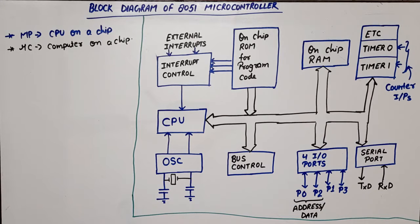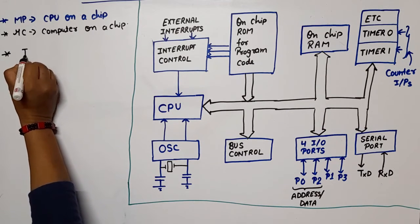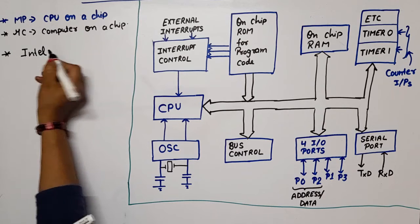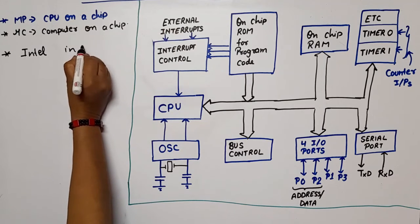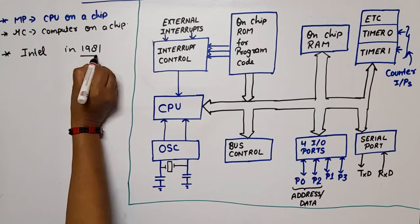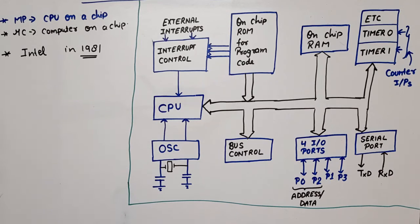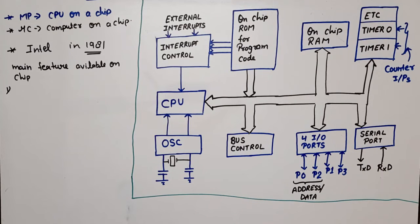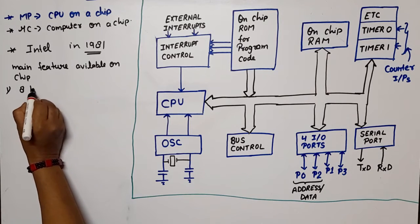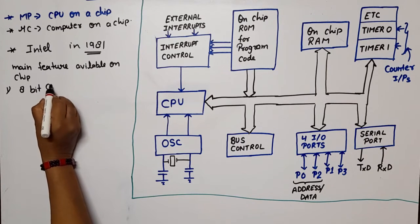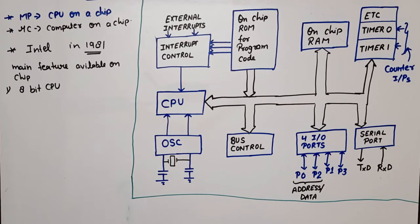Now let's start with the block diagram of the 8051. It was introduced by Intel in 1981. The first feature is the CPU — it is an 8-bit CPU, meaning whatever processing it does will be with 8-bit data. If it has 16-bit data, it will break it into two 8-bit pieces and then process it.